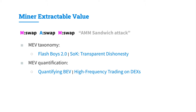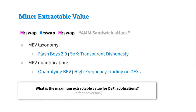The MEV taxonomy was first introduced by papers such as Flashbots 2.0 and SoK: Transparent Dishonesty. More recently, MEV has been quantified on public blockchains, from papers such as Quantifying BEV or High Frequency Trading on DEXs. We pose the question: what is the maximum extractable value for DeFi applications, for a given DeFi application design, assuming a perfect miner adversary computing the optimal solution and thereby extracting the maximum possible value?